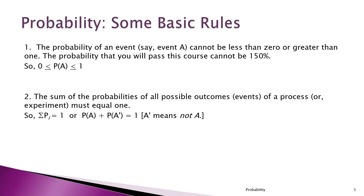If the sum of all your probabilities is less than one, it means you're missing an event or outcome. If it's more than one, that probably means the events you're looking at have some overlap — like looking at the probability of getting an odd number and the probability of a one at the same time. There's overlap there.